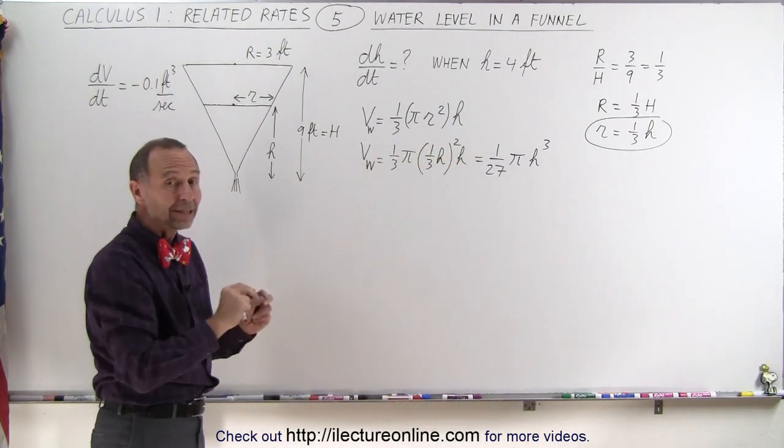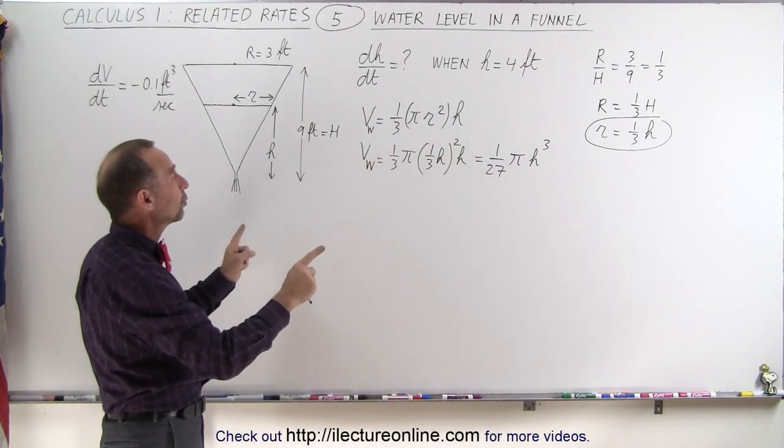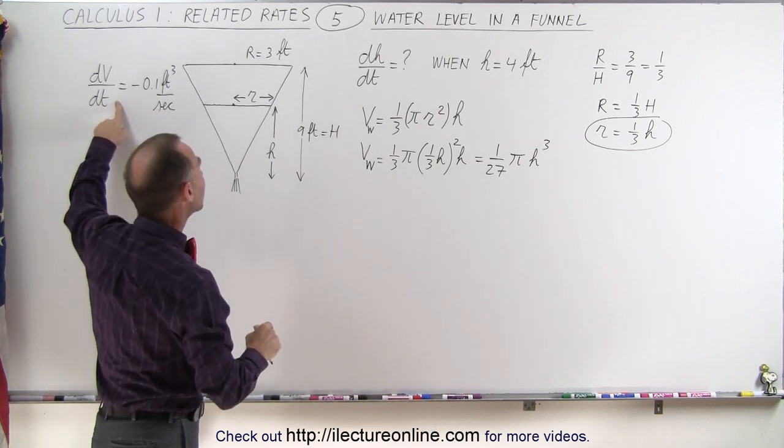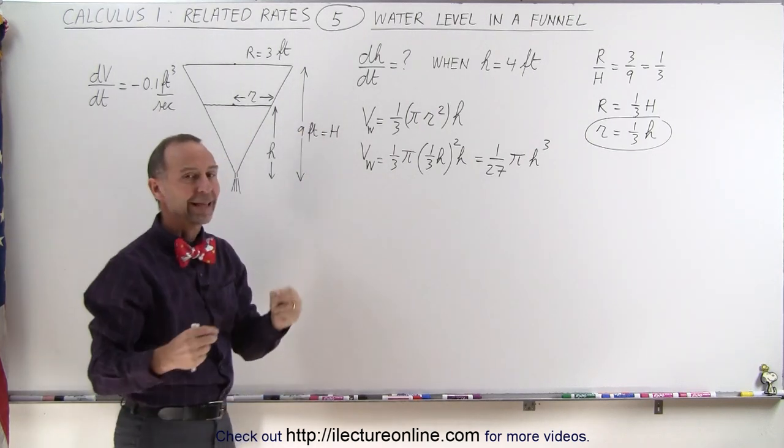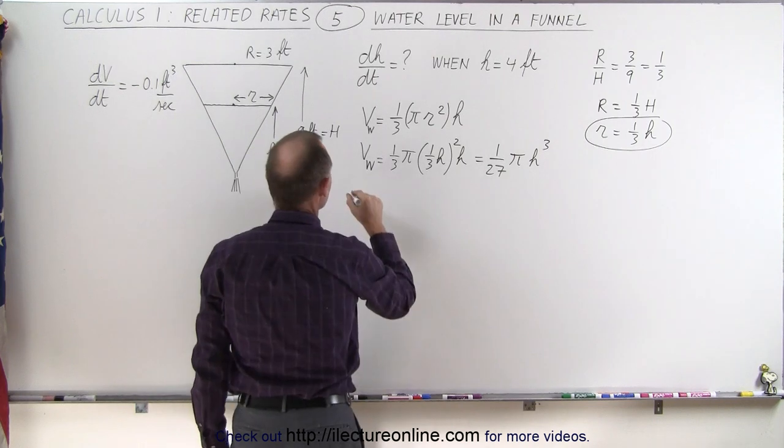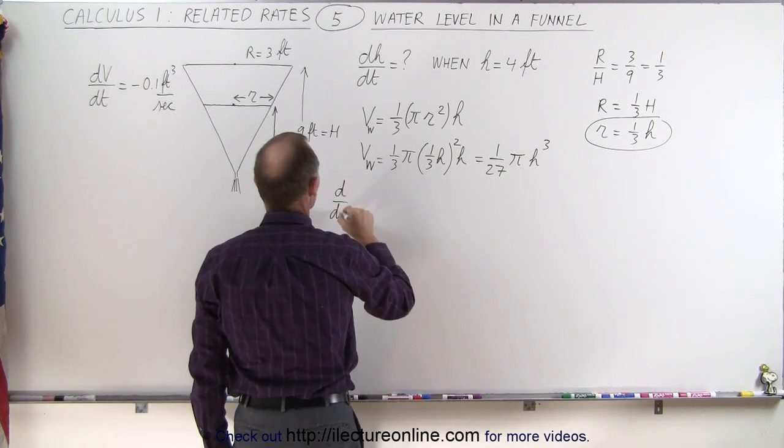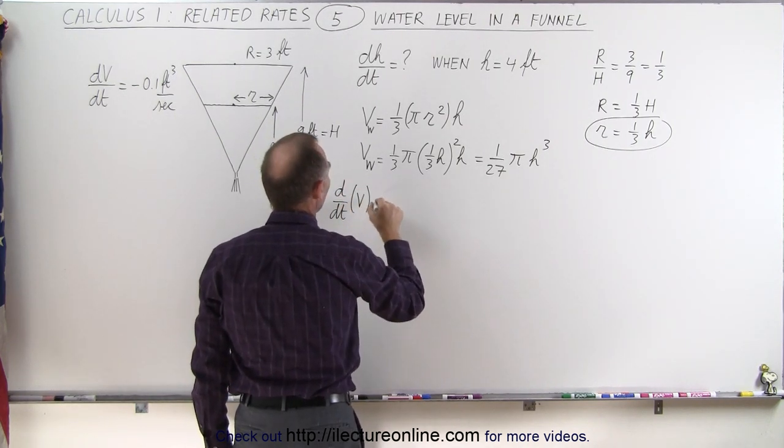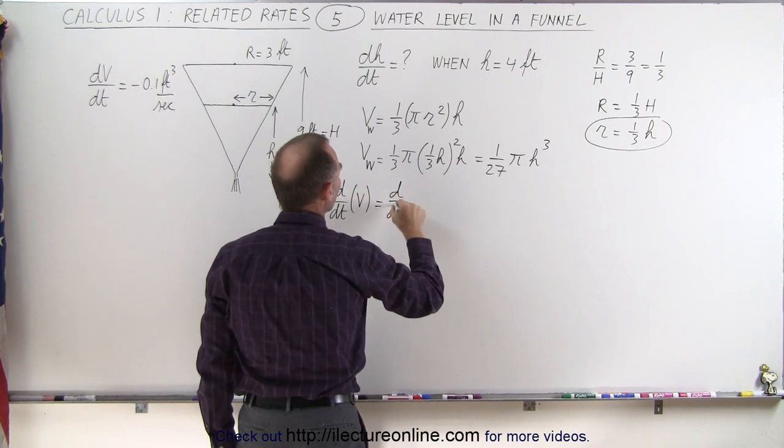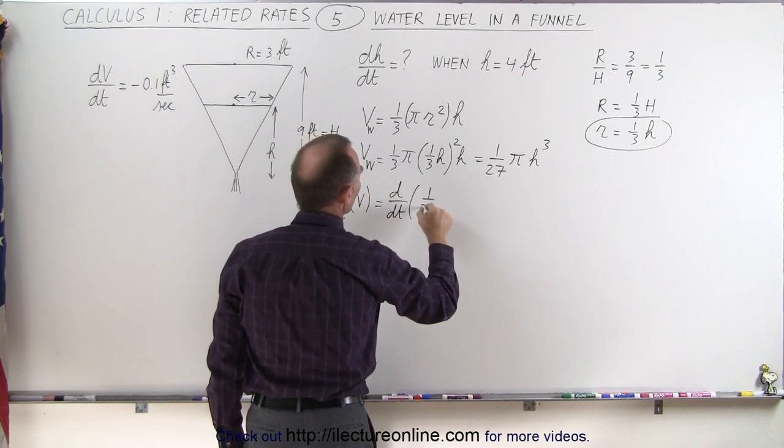So now we can take the derivative of both sides of the equation with respect to time so that we have a dv dt and a dh dt in the same equation. We'll take the d dt of the right side of the equation and set it equal to the d dt of the left side of the equation.